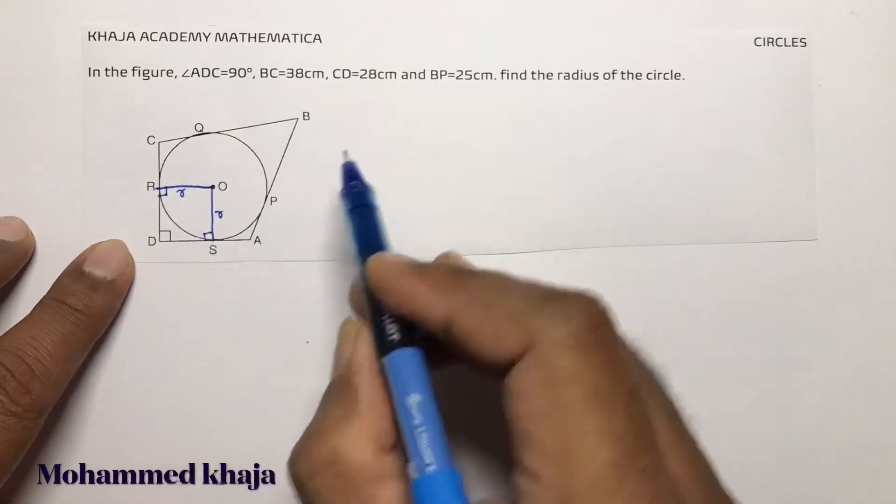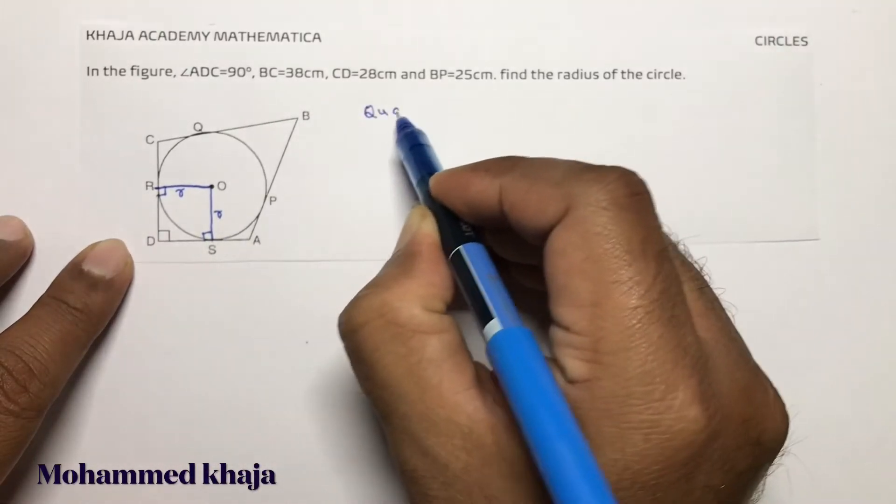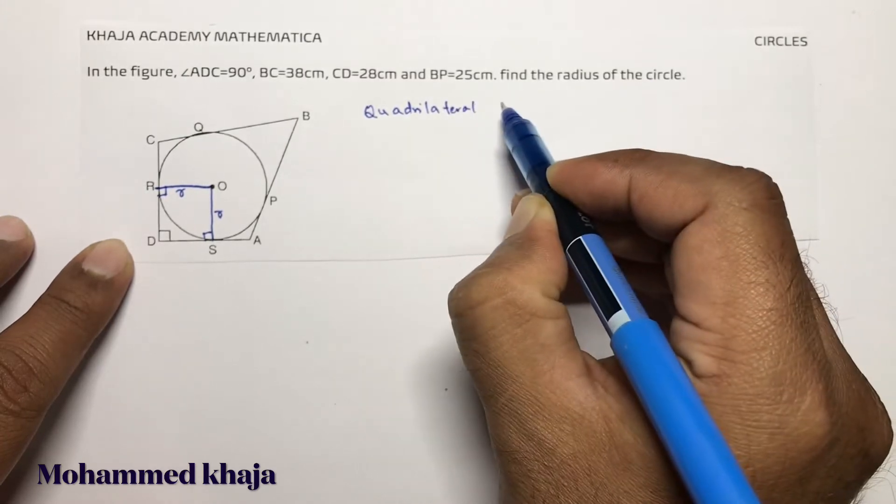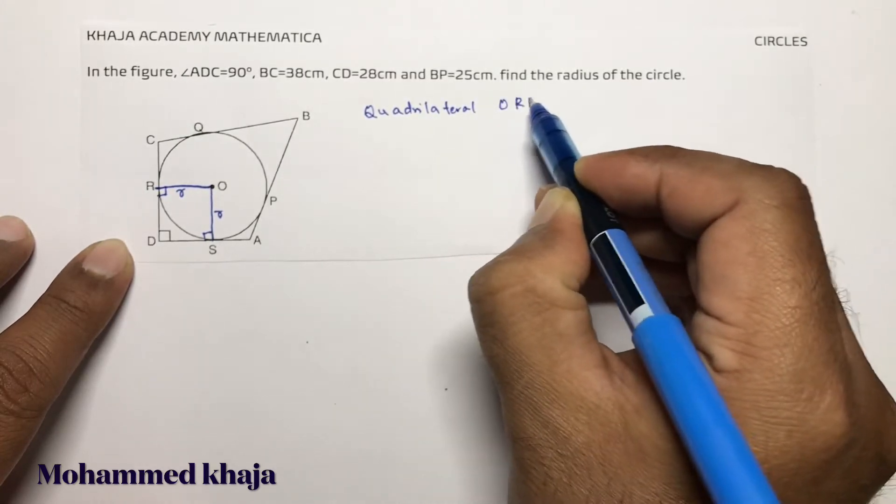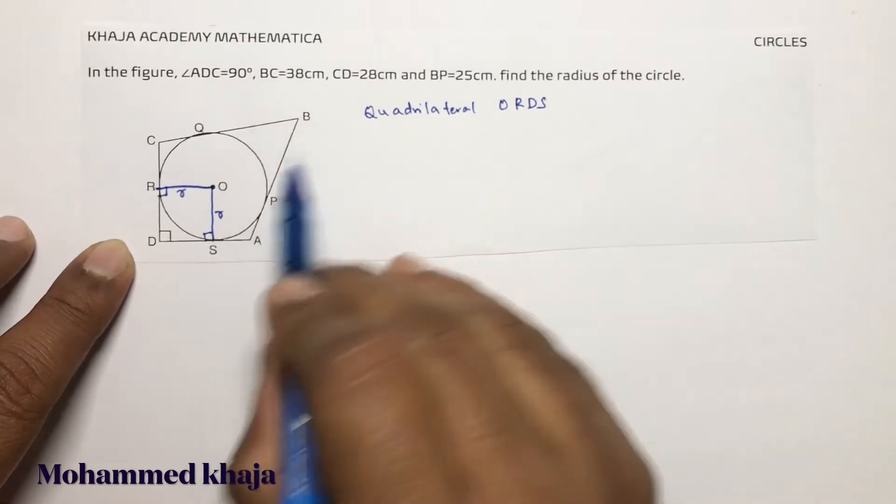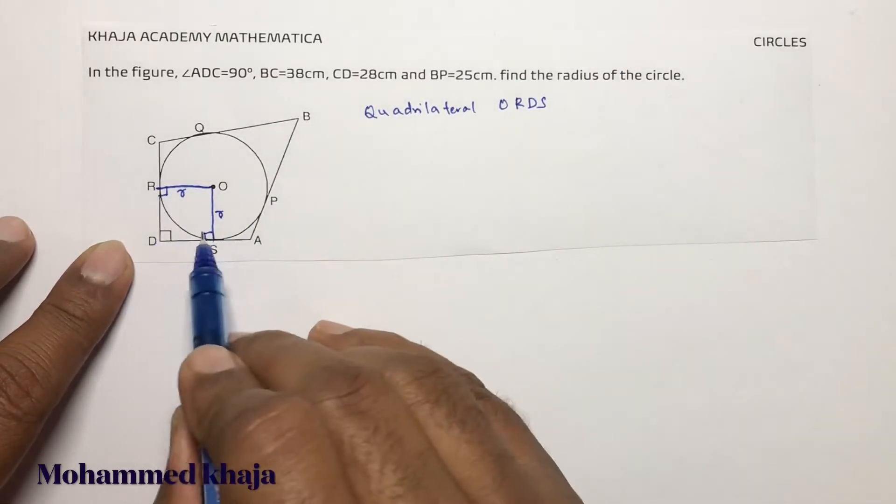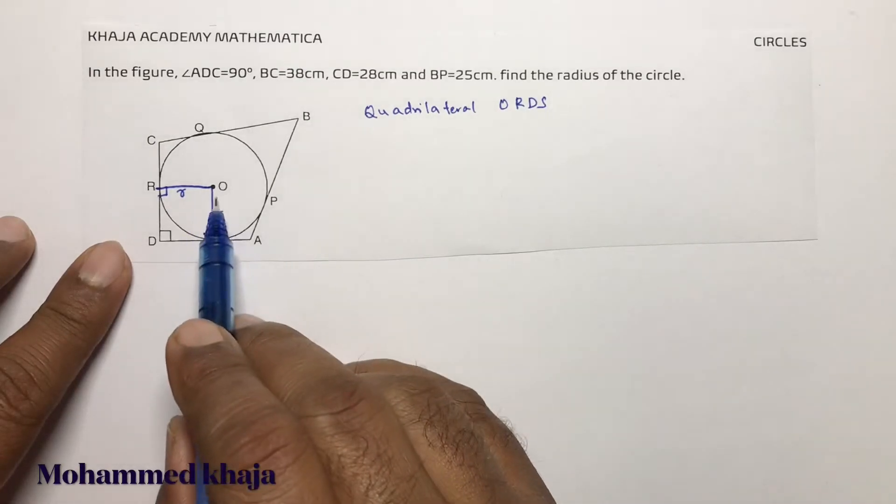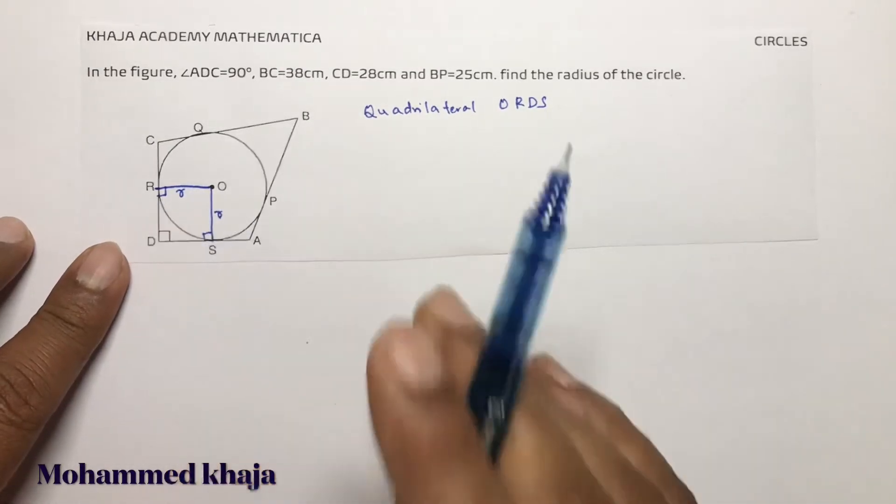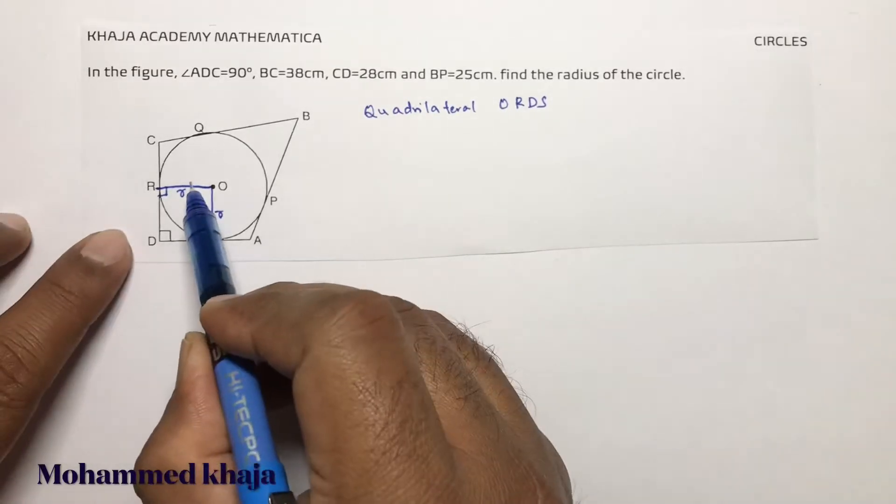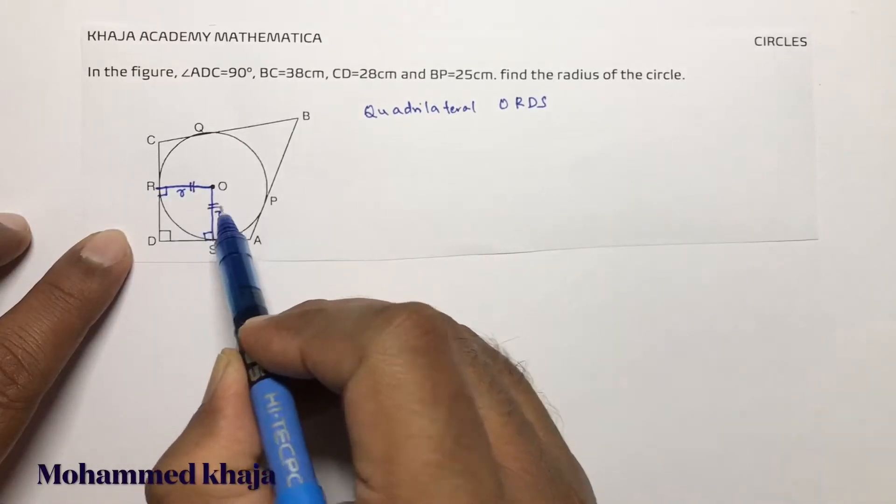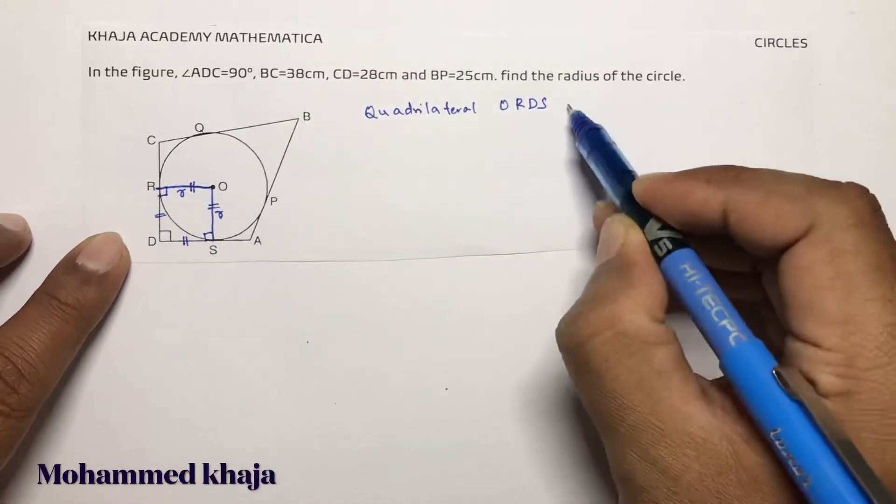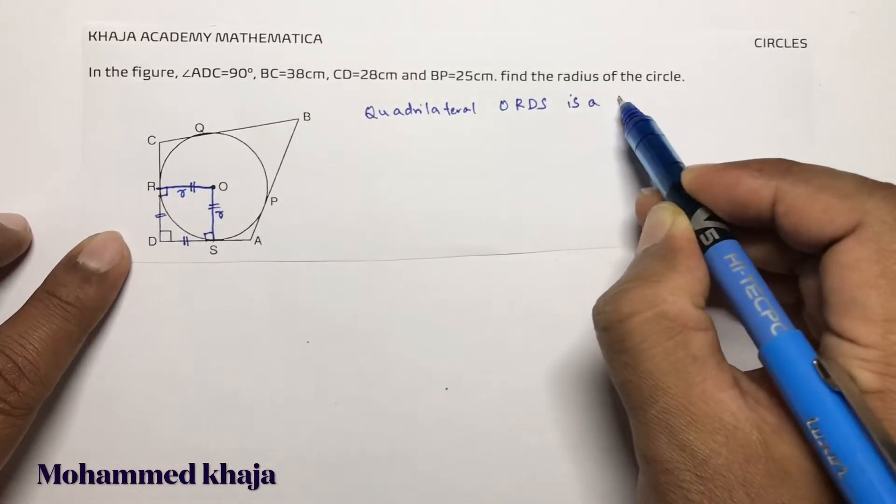When three angles are 90° in a quadrilateral ORDS, the fourth angle is also 90°. All angles are 90°. So if all angles are 90°, there are two chances: it can be rectangle or square. But see, adjacent sides are equal, so definitely it will be a square. ORDS is a square.